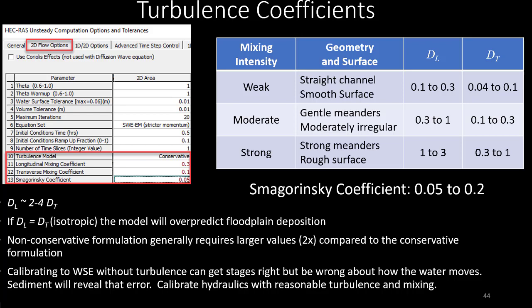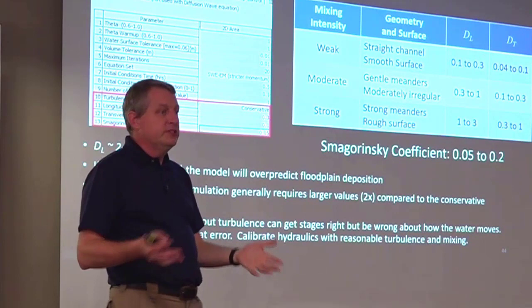If you do it isotropically, if you use an isotropic model, either not in RAS—I guess you could set those equal—but if you're using another model and it's isotropic, you will overpredict floodplain deposition. You will build a big bar. If you're using the non-conservative form, you're going to need larger values to get comparable results. And then here's the main thing, is that you don't want to wait till your sediment model to do your turbulence.